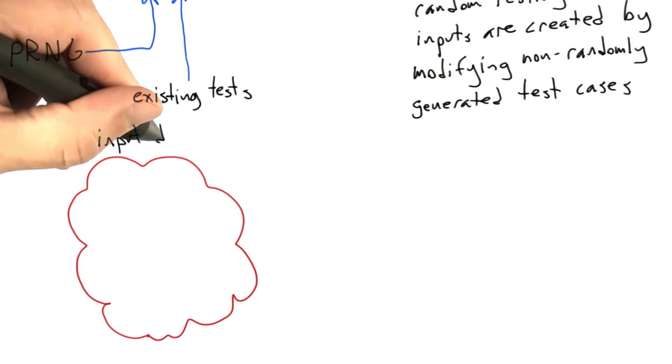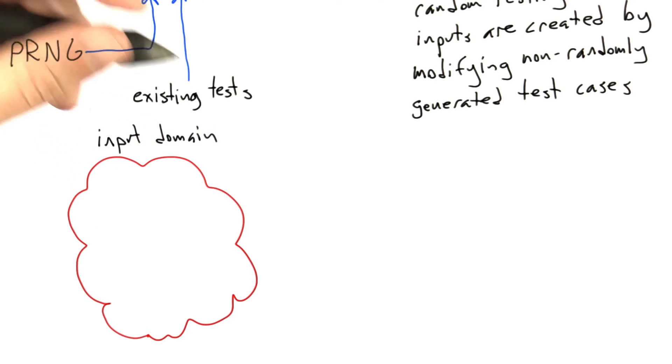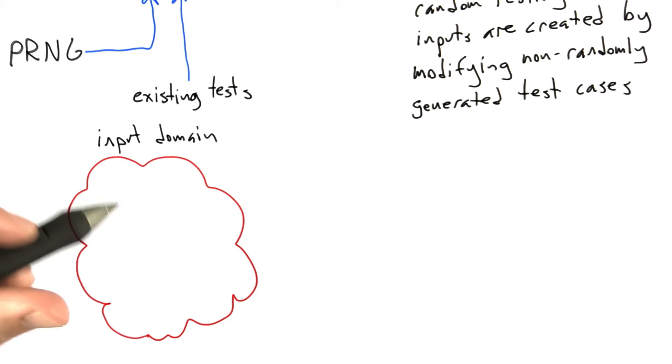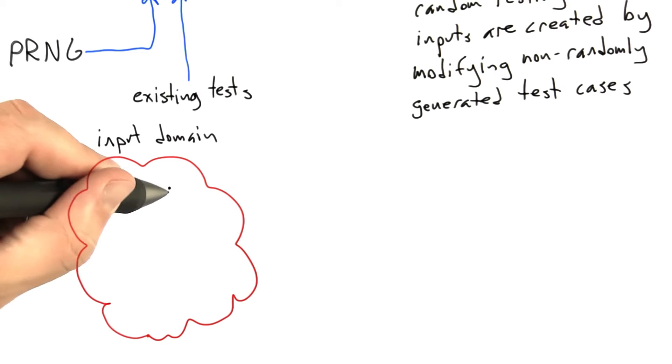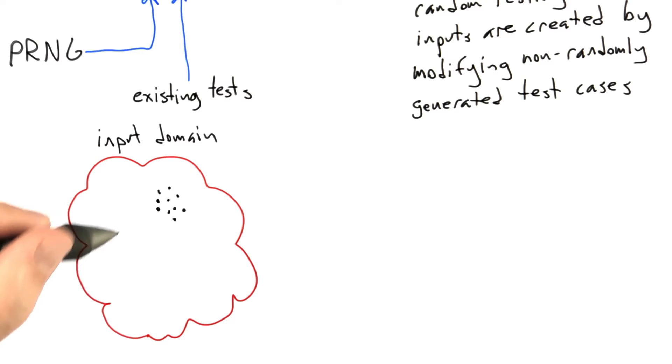So here we have the figure that we know and love of the input domain for some software under test. And if we think about what the generative random tester is going to do, what it's probably really going to do is cluster them in some part because it's very hard to cover the actual full space of inputs. But in any case, they're going to be spread out over some part of the region.